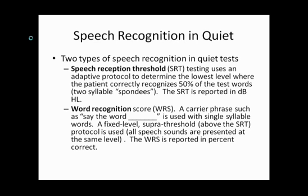A word recognition score, also called a WRS, involves using a carrier phrase such as 'say the word,' followed by the word — 'say the word cat,' 'say the word house,' 'say the word dog' — and is used with single-syllable words. A fixed level, supra-threshold protocol — meaning above the SRT — is used, so all speech sounds are presented at the same level. The word recognition score is reported as percent correct.